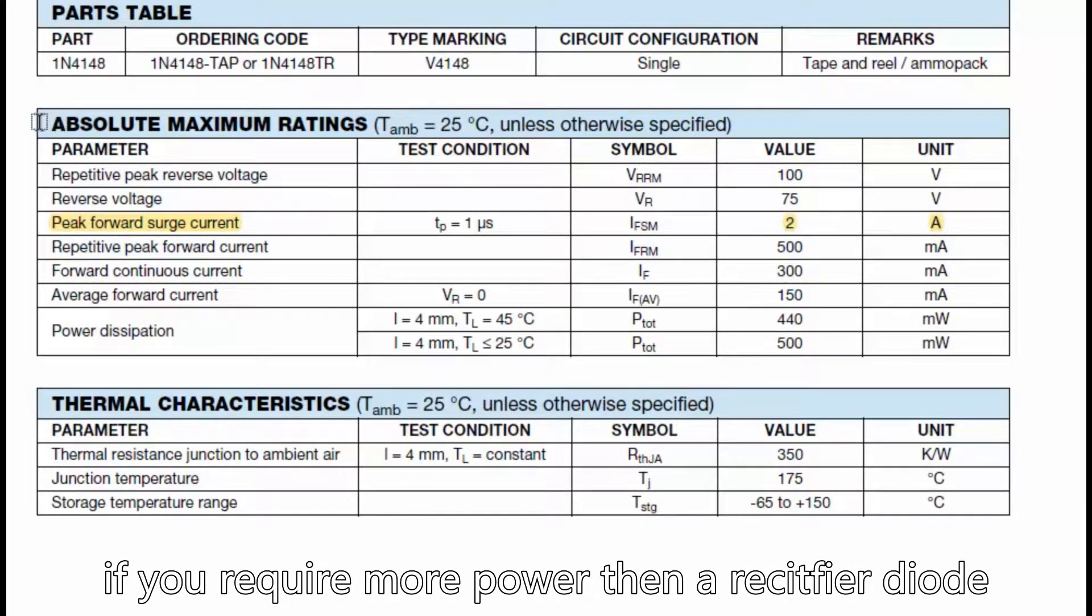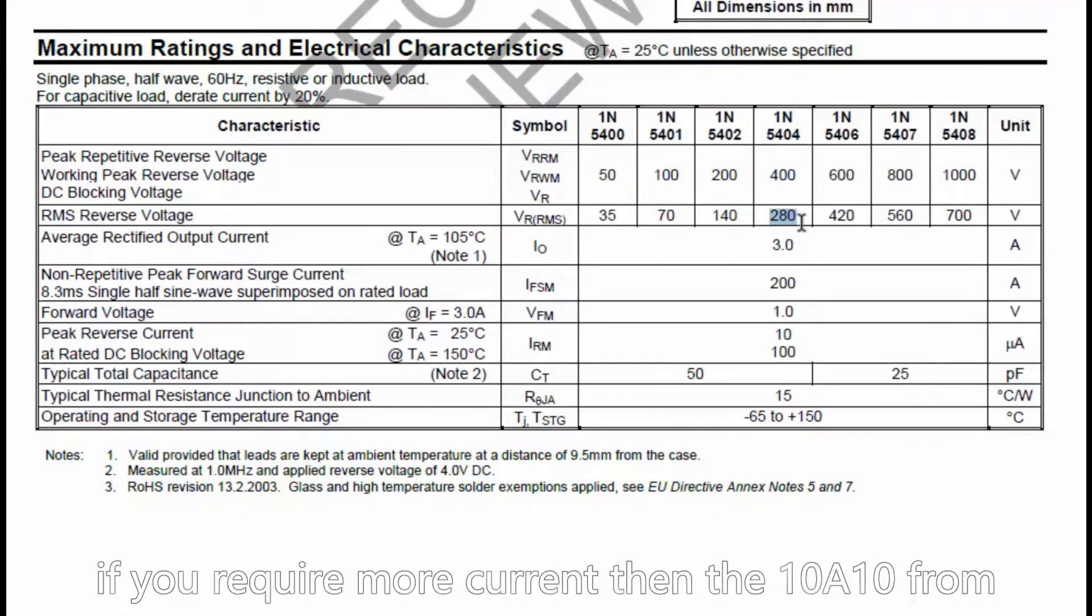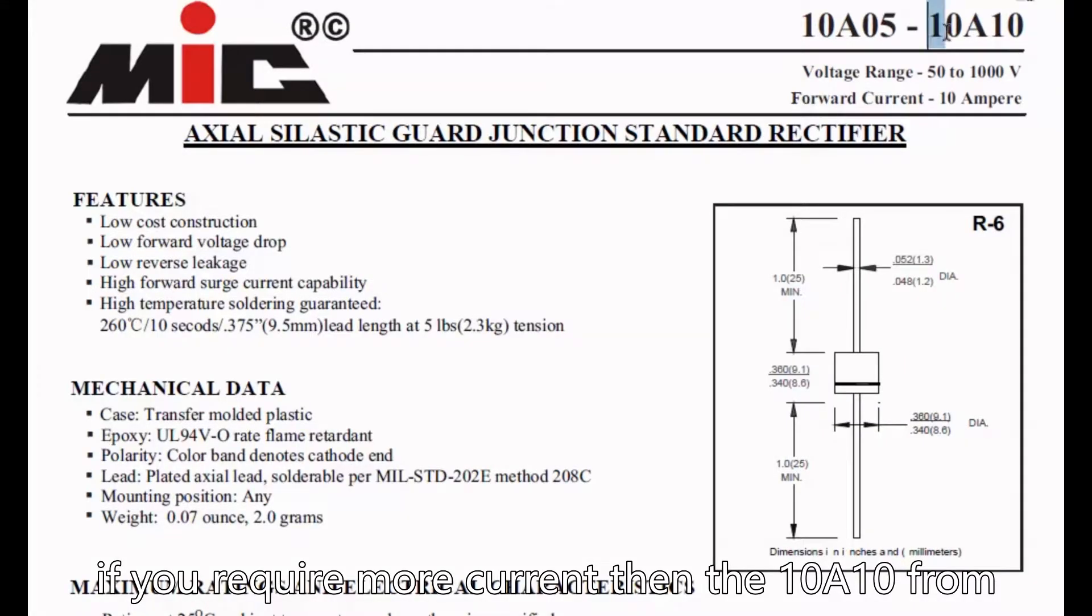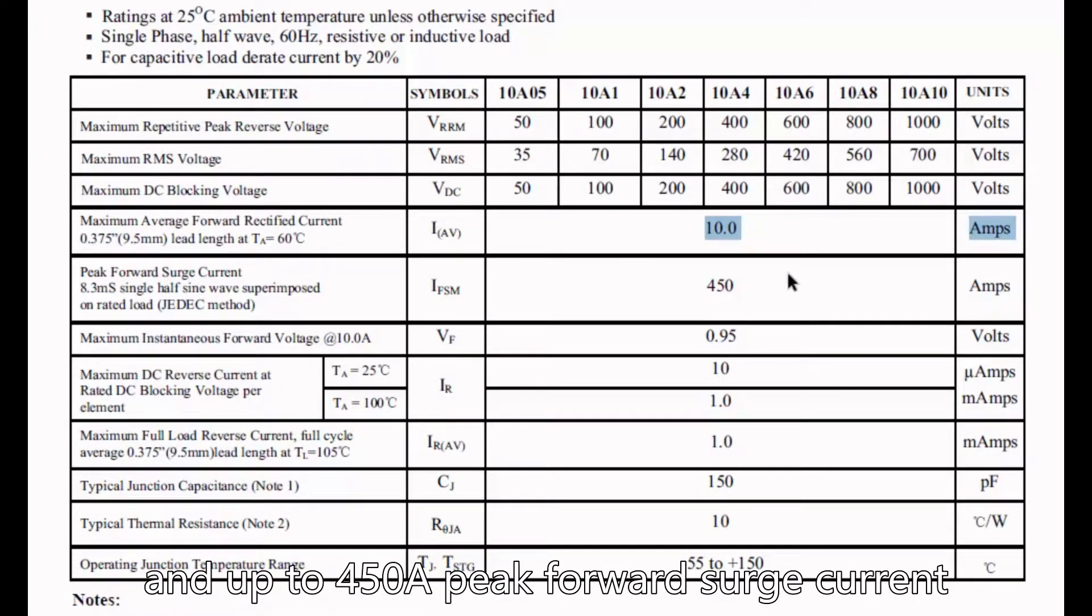If you require more power, then a rectifier diode such as the 1N5404 is a good choice. If you require more current, then the 10A10 from Master Instruments Corporation can handle 10 amps up to 450 amps peak forward surge current.